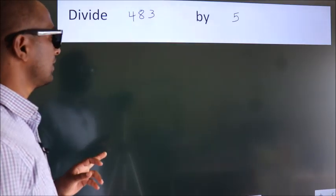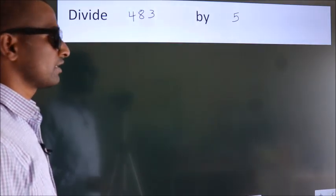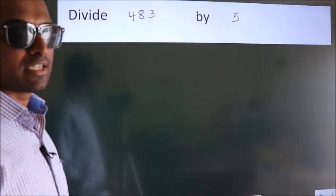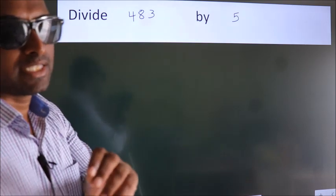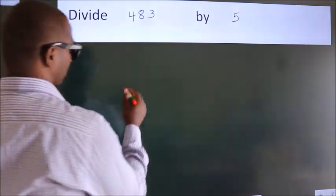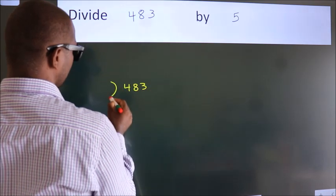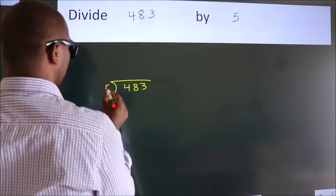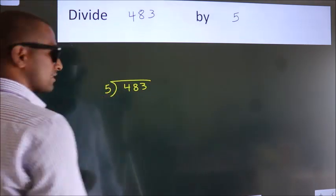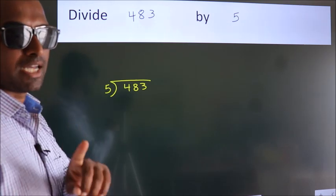Divide 483 by 5. To do this division, we should frame it in this way. 483 here, 5 here. This is your step 1.